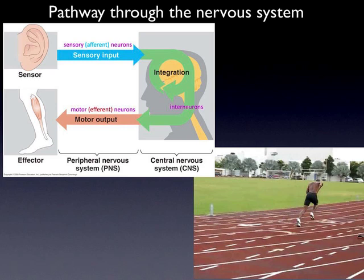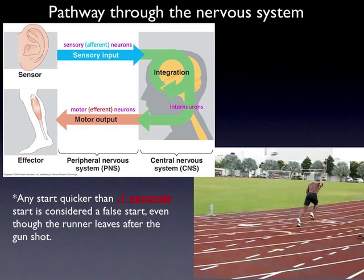It means you were trying to anticipate, and you happened to leave early and got out of the gate right when the gun went off — you were just lucky. So in official track events, in the Olympics and world track, even if you start any quicker than .1 second after the gun, it's considered a false start, even though you left after the gun, because you can't possibly react that quickly.